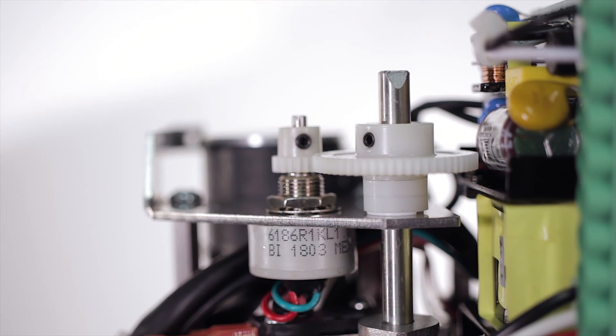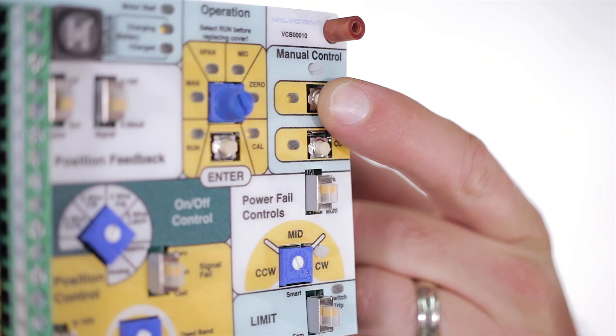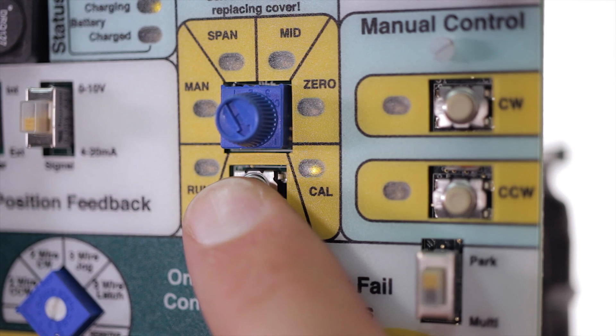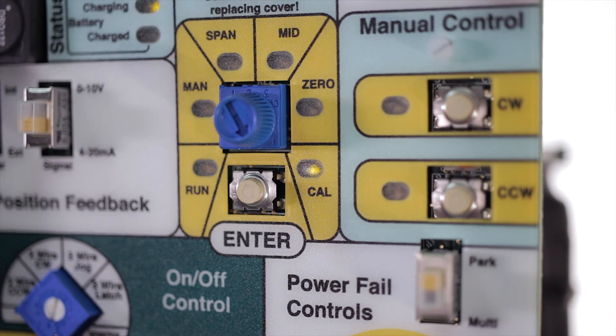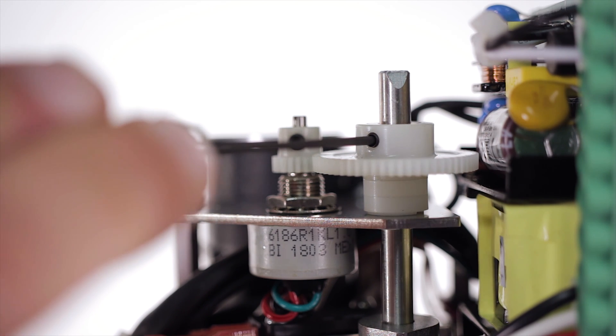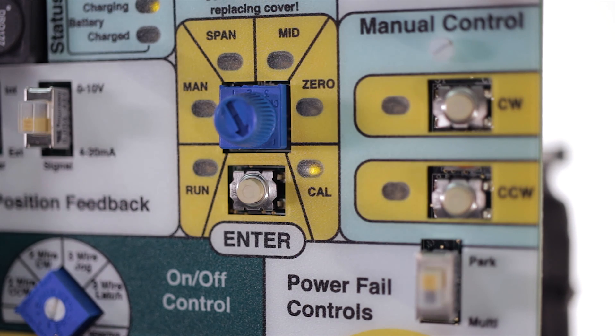Now we're ready to calibrate the potentiometer. Use your clockwise manual control button to drive the actuator fully closed. Hold the enter button down for two seconds until the calibrate LED light starts to blink. Loosen the set screw on the main gear behind the control board and slowly rotate the main gear clockwise while watching the calibrate LED light.